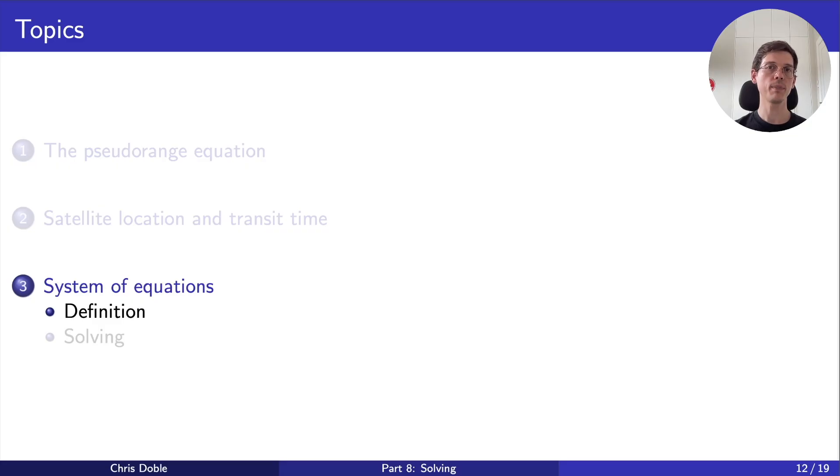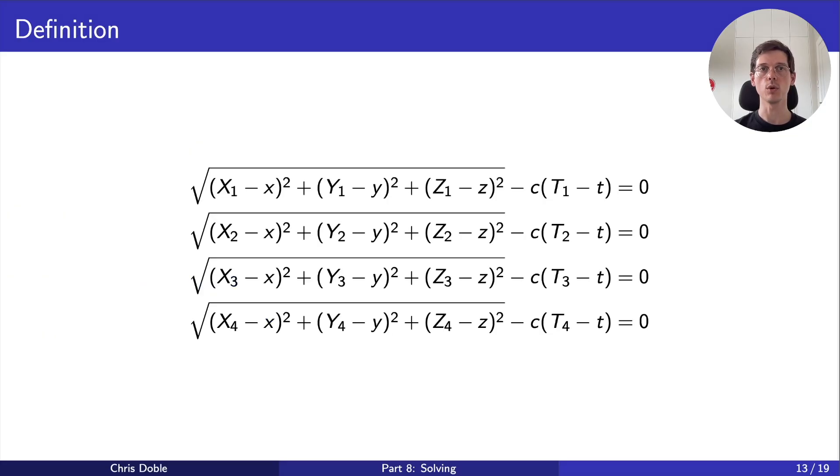Well, what if we copy the pseudorange equation three more times, each for a different satellite? We know how to calculate the satellite's locations and transit times. Our location will be the same across all four equations. And the satellite's clocks are synchronized with each other, so our clock bias will be the same across all of them too. So this should do the trick. We now have four equations and four unknowns.